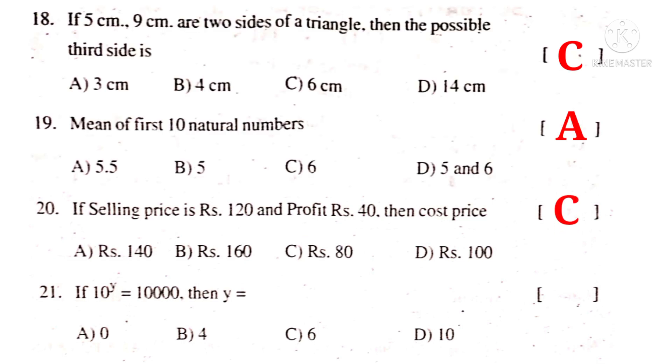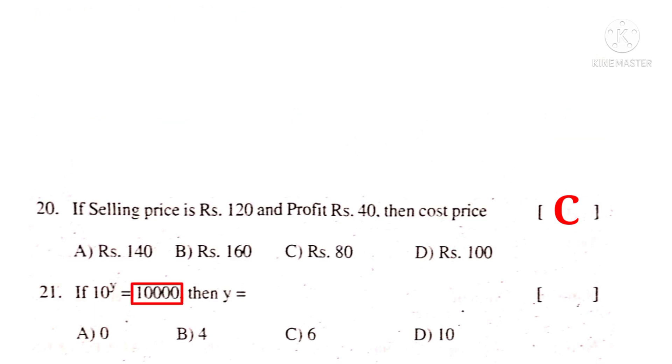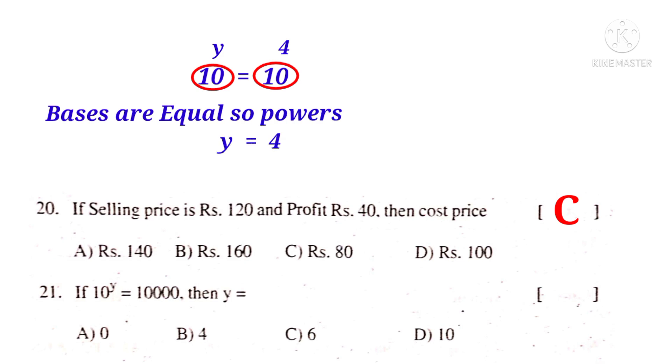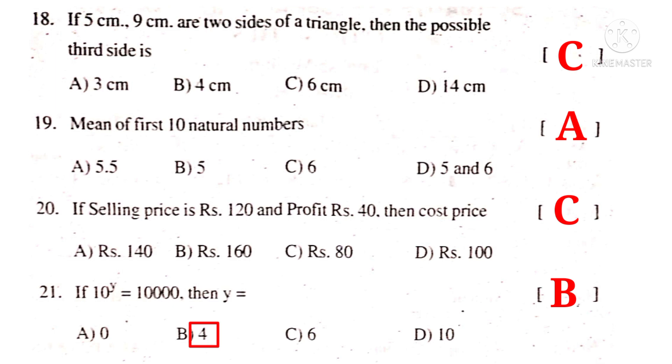21. If 10 power Y is equal to 10,000, then Y is equal to. Observe here, 10,000 has 4 zeros. So it can be written as 10 power 4. So here, the bases 10 are equal. So the powers Y and 4 must be equal. So Y is equal to 4. So the correct choice is B.